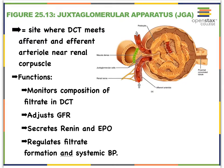The juxtaglomerular apparatus has many different functions. For one, it is constantly checking the composition of the filtrate that has formed and made it to the distal convoluted tubule. Your JGA can also adjust how much blood will enter into the glomerulus, and that is going to impact the GFR — the glomerular filtration rate, meaning how fast the blood is filtered.